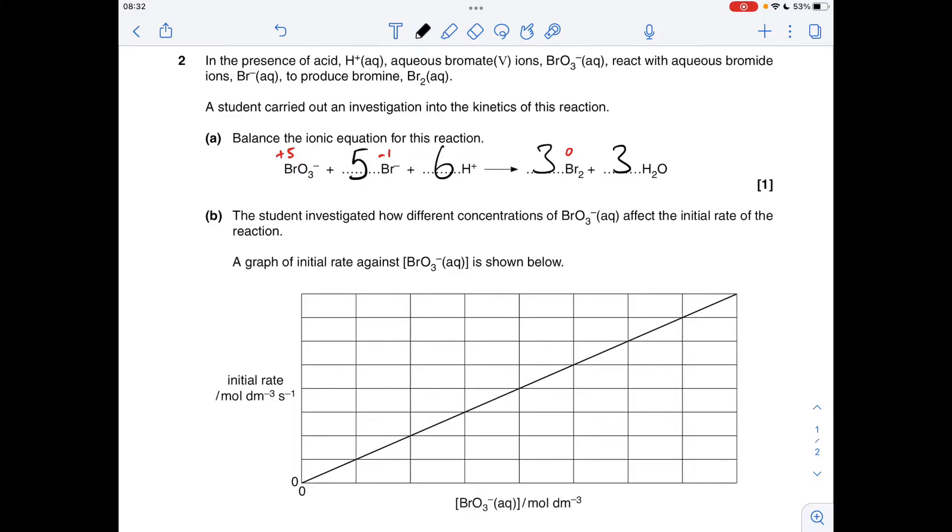And then if you wanted to, you could just check the charges balanced—they do, by the way. But I'll just show you: we've got an overall charge on the left of minus five plus six plus gives us one minus, and obviously no charge on the right.